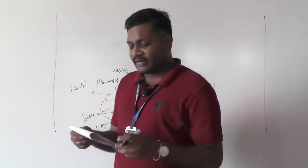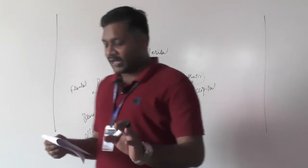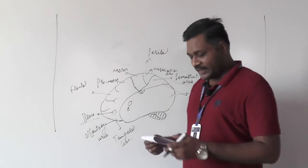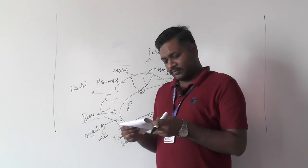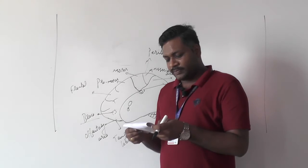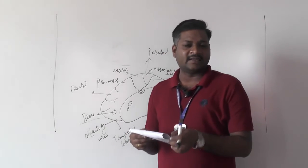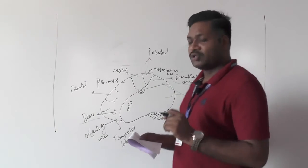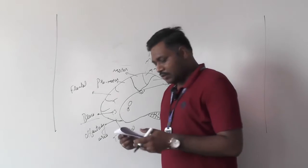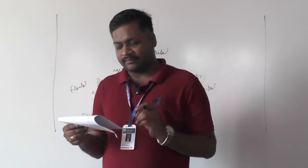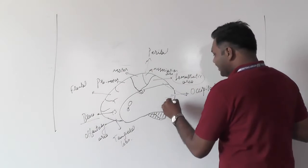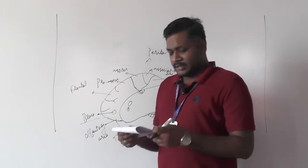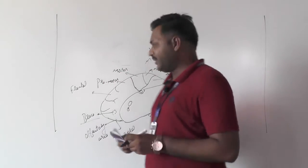Question 95: Broca's area is connected with speech. The Broca area in the cerebrum is referred to as the speech area, so option A is correct. The answer key gives option D, which is not correct — please note that correction. Question 96: the primary visual area is located in the occipital lobe, so option C is correct.